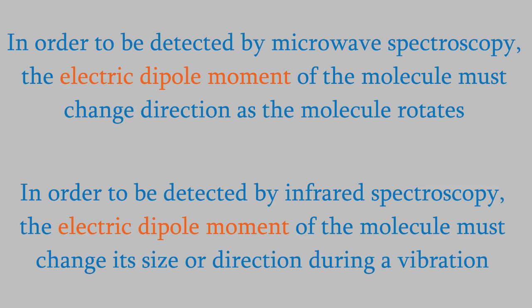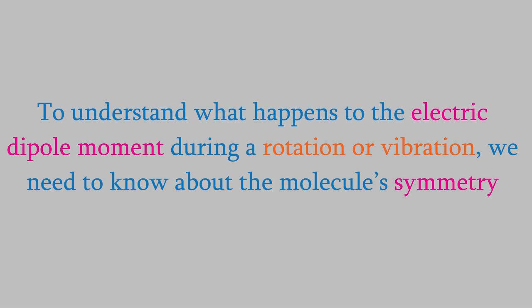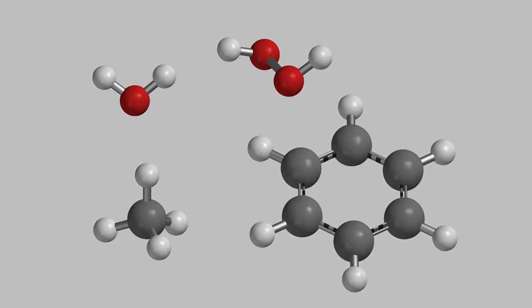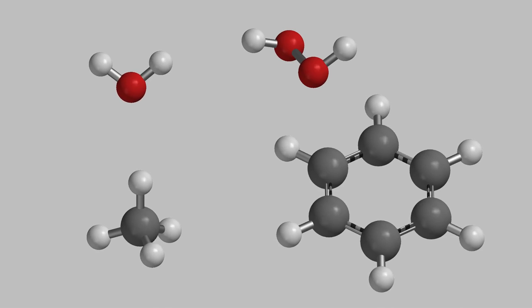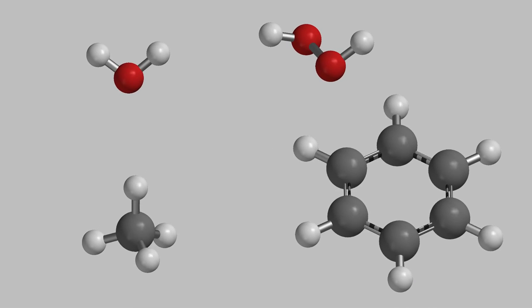But how do we know whether the electric dipole moment is changing? To figure that out, we need to know about the symmetry of the molecule. This actually isn't as simple as it sounds. You can look at molecules and see that they're all symmetric in some ways, but if you look carefully, you can see that the kind of symmetry isn't really the same in each of them. In order to understand whether the electric dipole moments change when molecules rotate or vibrate, we need to pin down exactly what the different types of symmetry are and how we can recognize them.